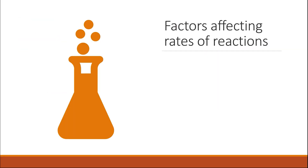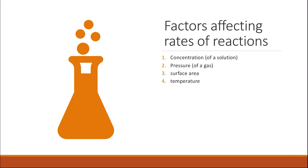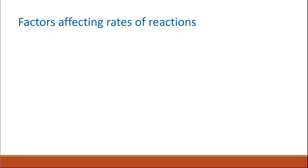There are five main factors that affect the rate of the reaction. The first two are the concentration of a solution or pressure for gases. We can measure the concentration of a solution, but for gases we usually deal with pressure. Then there is the surface area of the reactants. The fourth factor is the temperature of the reaction, and finally the use of a catalyst.